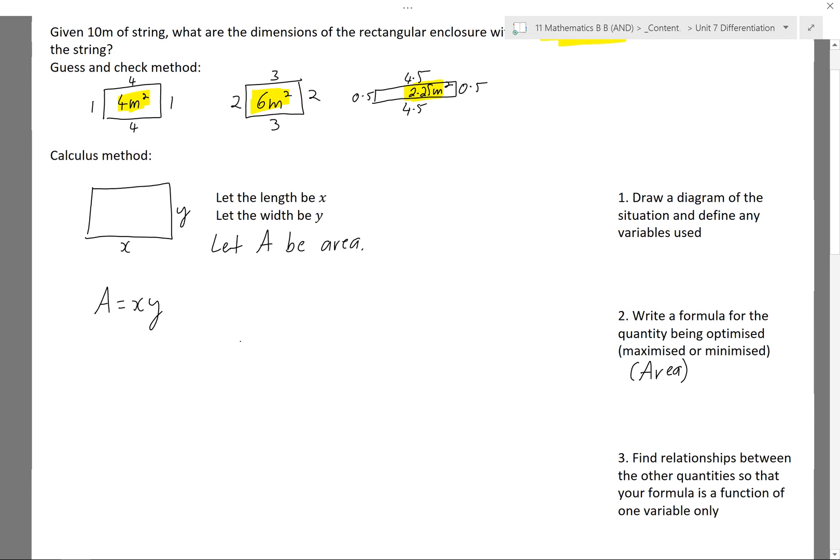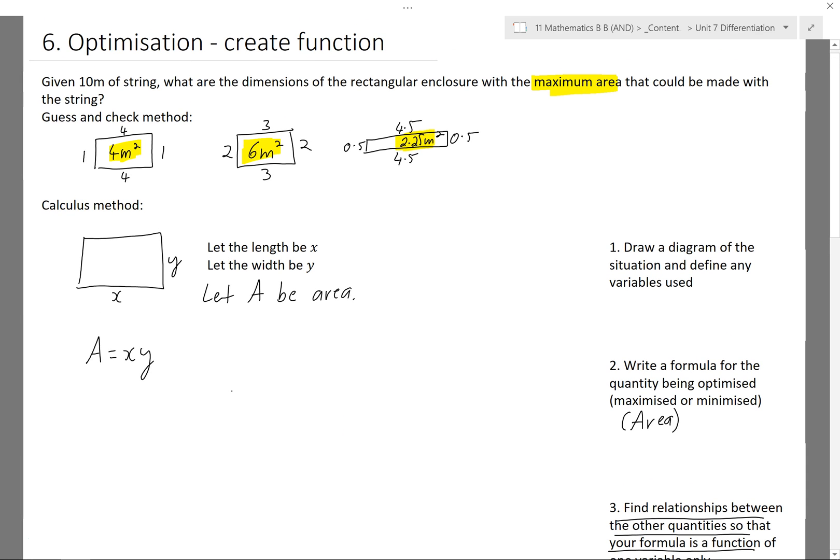So I'm going to need to do something. Step three says find any relationships between the other quantities so that your formula is a function of one variable only. At the moment, my area is a function of two variables, so my goal is to eliminate one of those variables. So I'll look back in the question. Normally there'll be some fact that I haven't used, given 10 meters of string.